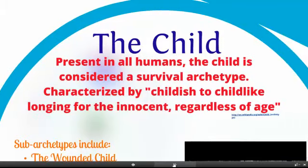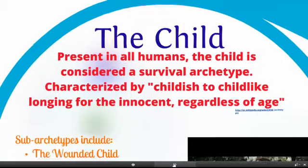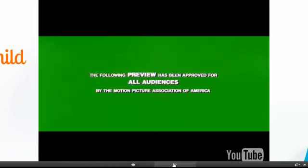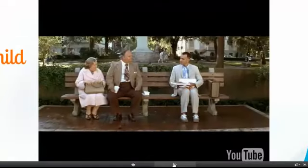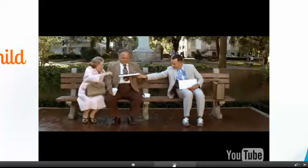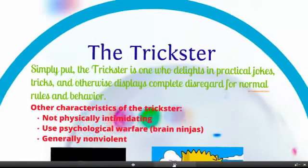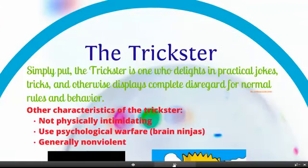The child is something that's present in all humans. It's considered a survival archetype, characterized by a childlike longing for innocence regardless of age. Some examples would be the wounded child, the orphan child, the dependent child, the innocent, the eternal, and divine nature. With Forrest Gump, we see the childlike aspect even in an adult — it's that aspect that's wanting to get us back to innocence.